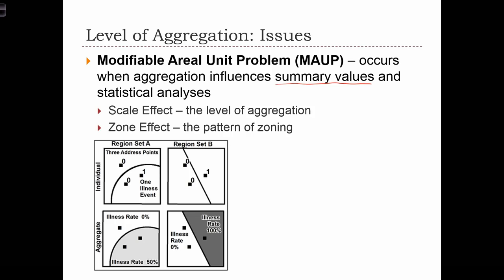When we aggregate data and then perform statistical analyses on that aggregated data, we might find that the results of our statistical analysis differ depending on how we aggregated the data. So if we do an analysis on census tracts, the result might not be the same as if we were to do that analysis at the state level of aggregation.